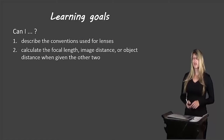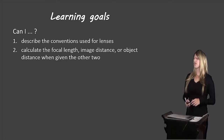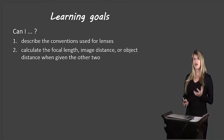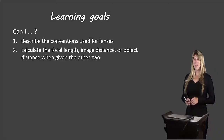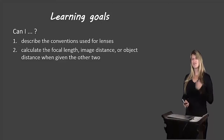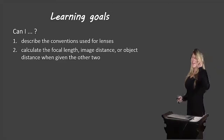Let's review our learning goals. You should be able to describe the conventions used for lenses — the positive and negative signs. You should be able to calculate focal length, image distance, or object distance when given the other two. If you can do all these things, fantastic. If not, please re-watch the video, and if you're still having trouble, come ask me in class tomorrow. That's all for now — bye-bye!